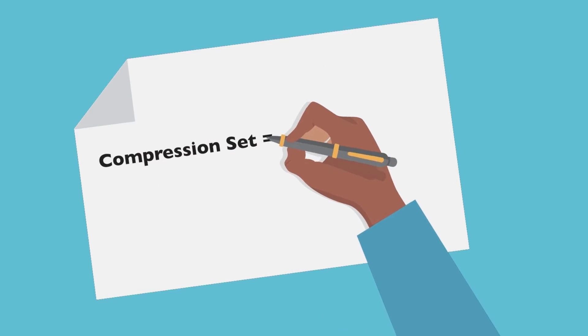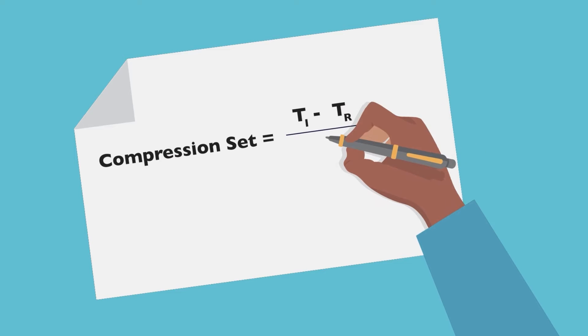The elastomer button sample is removed from the jig apparatus and after 30 minutes the height is measured. After the measurements have been taken, we use this formula to calculate compression set.